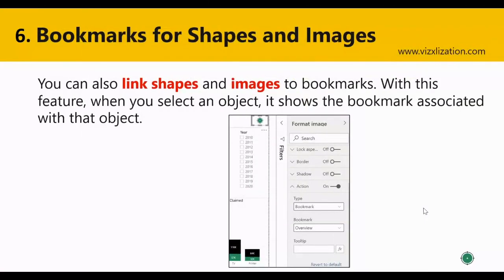Bookmarks for shapes and images — you can also link shapes and images to bookmarks. With this feature, when you select an object it shows the bookmark associated with that object. We also have a hands-on question about this type of feature in our case study.